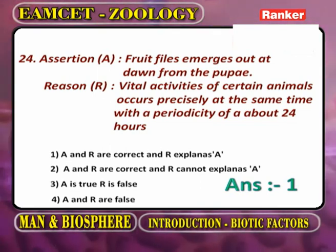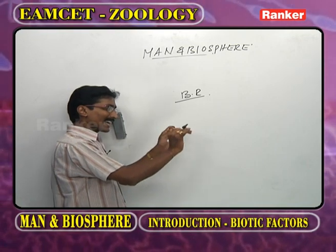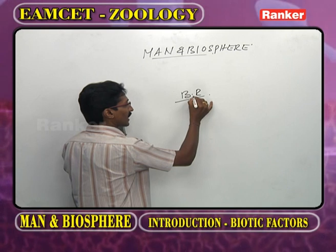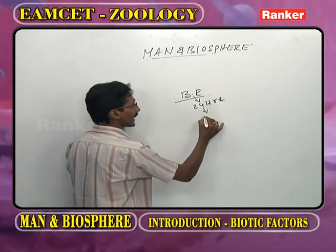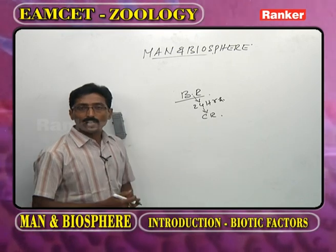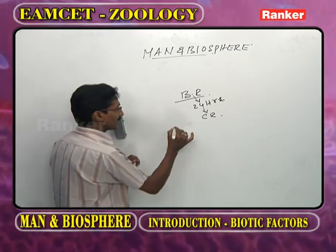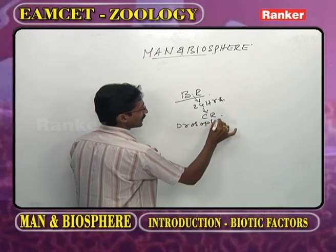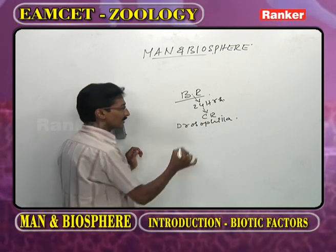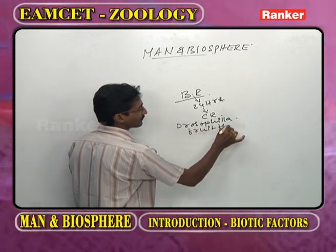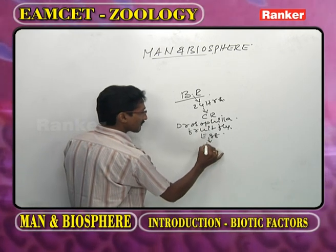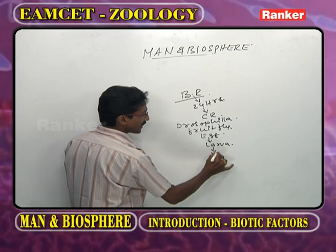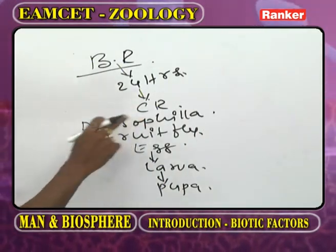Biological rhythms are the regular occurrence of biological activities. Biological rhythms associated with 24 hours of a day are called circadian rhythms. One example of circadian rhythm is Drosophila melanogaster, popularly known as the fruit fly. In its life history: egg becomes larva, larva becomes pupa.